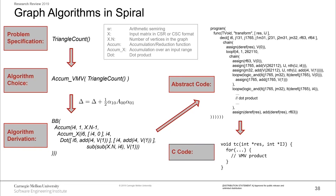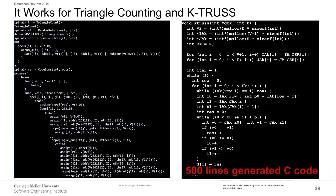Looking through the flow: you start with the problem specification — triangle count, or something in the AI/ML space — then some algorithm choice happens, which is where Scott's knowledge comes in. Then we automatically derive the true algorithm-level data flow, which is where the computer algebra system automates what Scott taught us. Eventually comes code with low-level code optimization — like how to do pointer chasing efficiently on an EMU. The result is C code that looks almost like assembly, machine-generated and not meant to be read. We were able to automatically generate the same codes that the year before our students wrote by hand to win the HPEC graph challenge.